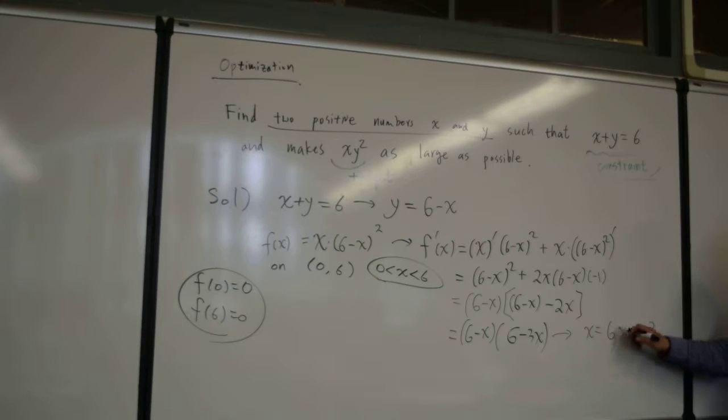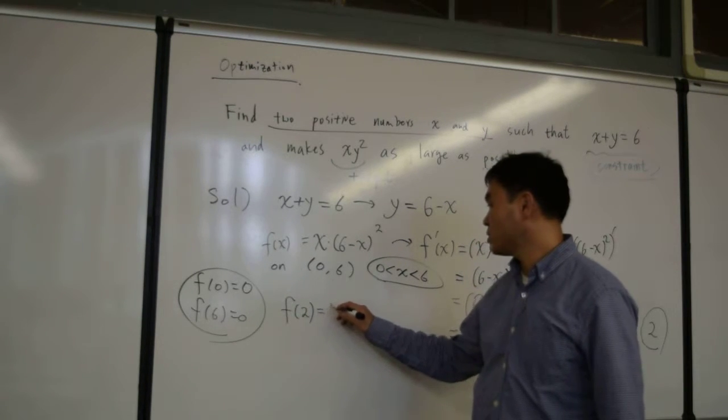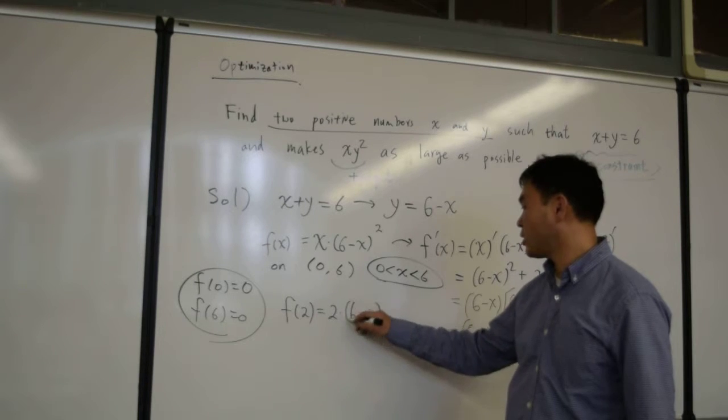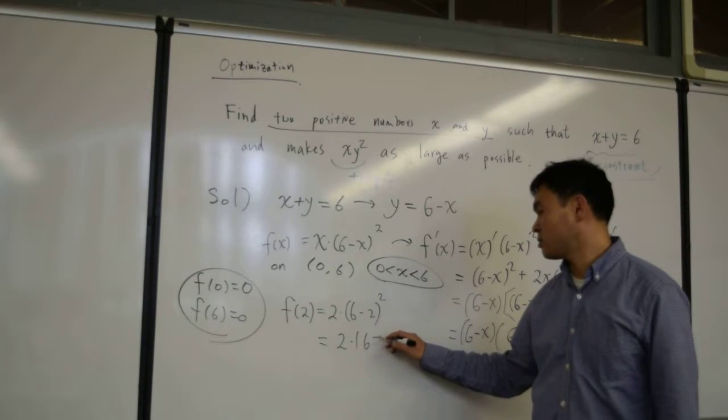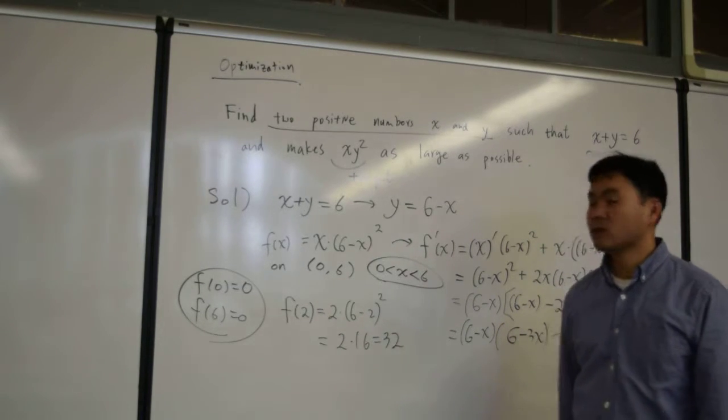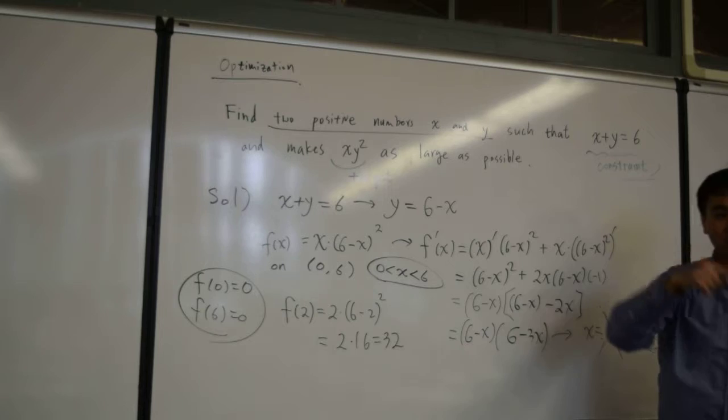And by the way, although we found 6 or 2, because this is on the boundary, boundary values are not considered as critical numbers. You only consider points inside the domain as critical numbers. So 2 is the only critical number. That's the only thing that we have to compute. So f of 2 is 2 times 6 minus 2 squared, which is 2 times 4 squared 16. That's equal to 32. So we can see that it's going to have the maximum of 32 at 2, and on the boundaries, it's going to go to 0.